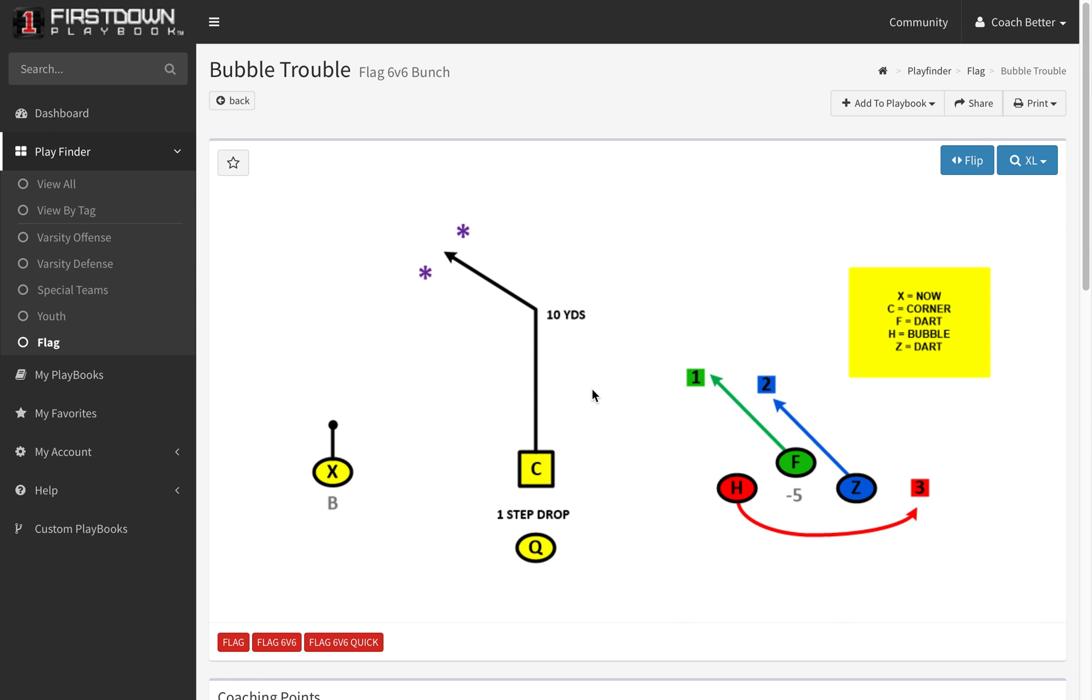So every group and every formation in First Down Playbook, we have a drop back and a run pass option section. But we also have a quick game area. And you're looking at a 6v6 play that we're going to break down today out of our bunch formation. The way we coach this play up is that the quarterback is going to be in a pistol or shotgun type formation back here. And as soon as they get the ball, their feet are going to pop and be ready to throw.